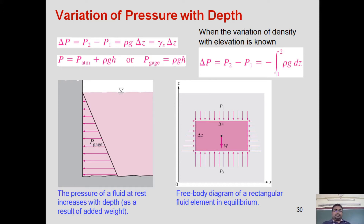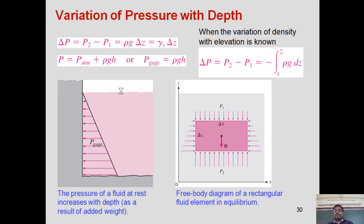Let us consider a container filled with water. If we draw the pressure variation it will look like a triangular one. At the free surface of water, pressure will be zero, and as we go towards the bottom, pressure will keep on increasing linearly. From the hydrostatic law, if we integrate dp = ρg dz, we get pressure equal to ρg times z, where z is the vertical height.